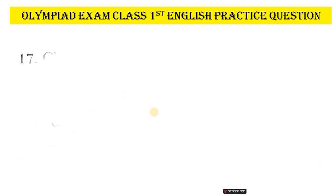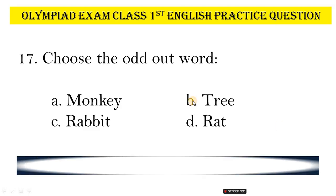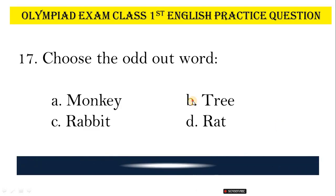Question No. 17. Choose the odd one out. Options: A, Monkey; B, Tree; C, Rabbit; D, Rat. Correct answer is Option B, Tree.